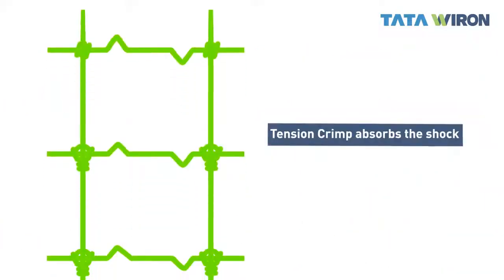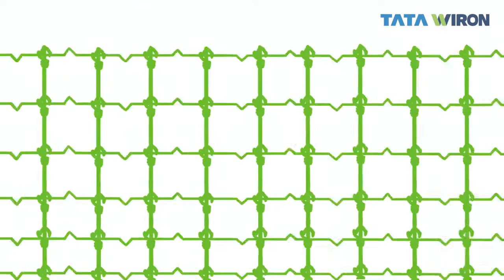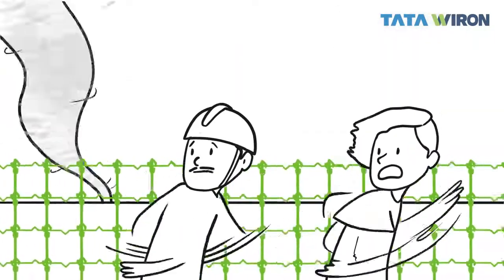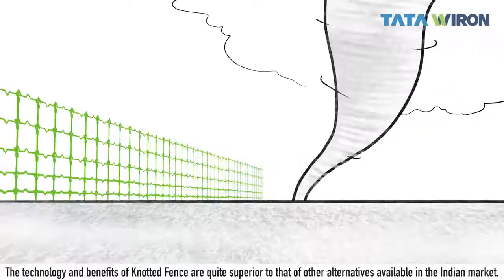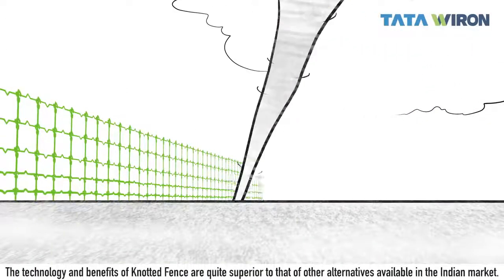It absorbs all the shocks and tremors and still stands strong. Natural calamities can also come without a warning, but the structure of the fence stays intact after impact.